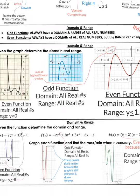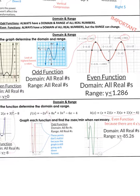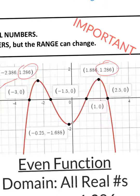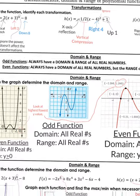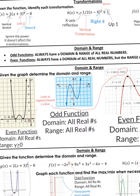The next thing to talk about is domain and range. And I put this note on there. Important. It's important to know that odd functions always have a domain and range of all real numbers, because they can move up, down, left, right freely. There's no restriction.